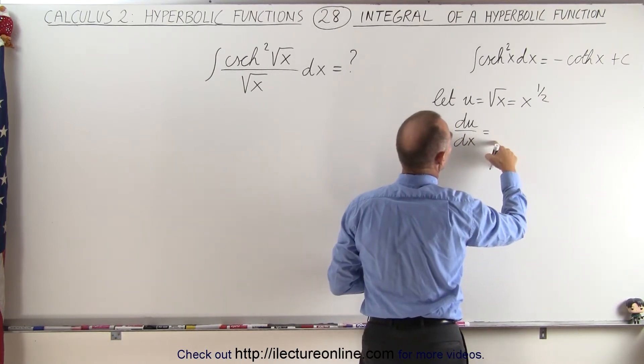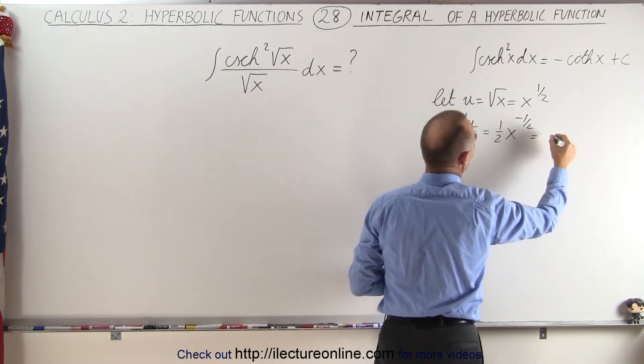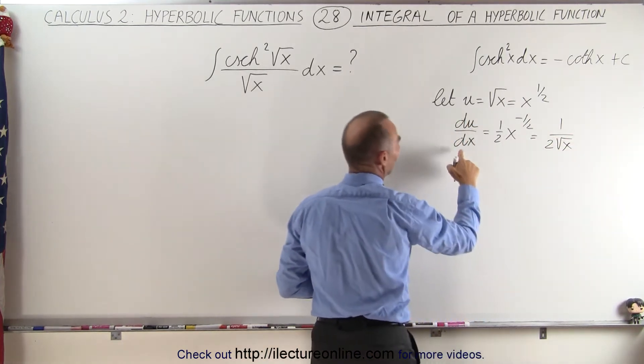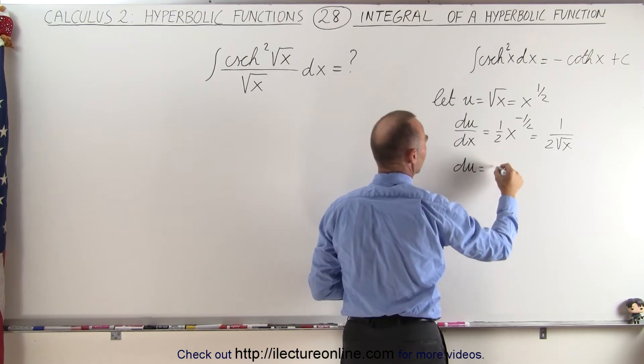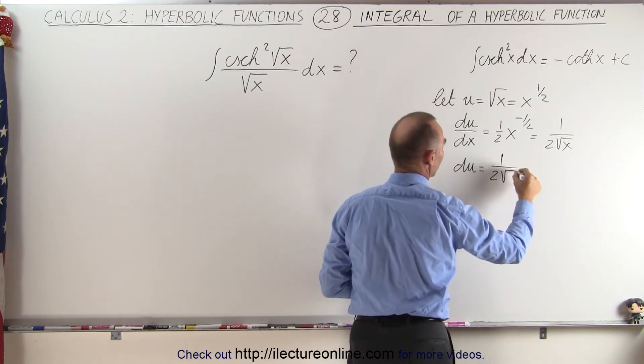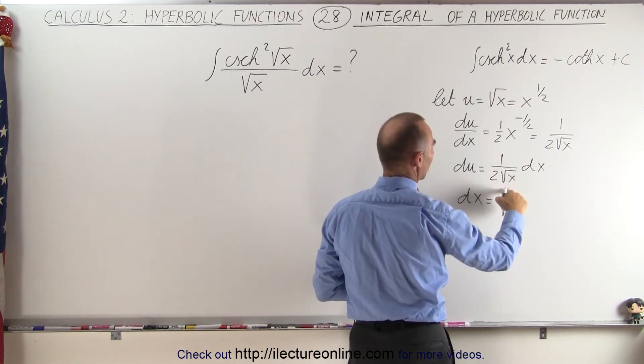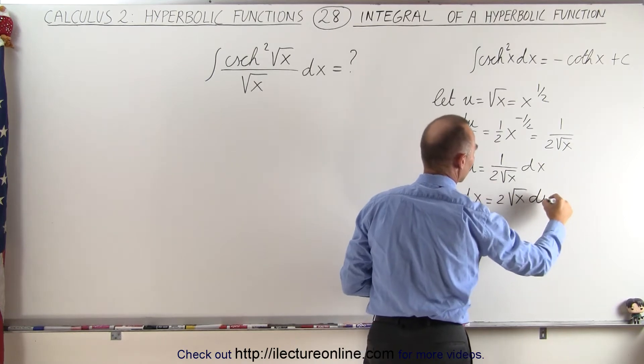Which is equal to 1 over 2 times the square root of x. Then we can put the dx over there, so du is equal to 1 over 2 times the square root of x times dx, or dx is equal to, I'm going to bring that up here, 2 times the square root of x times du.